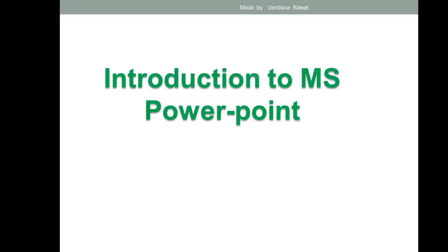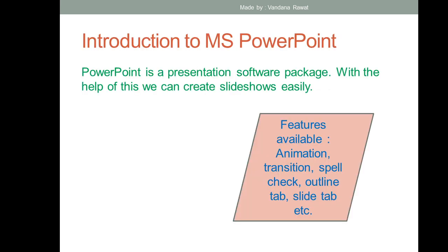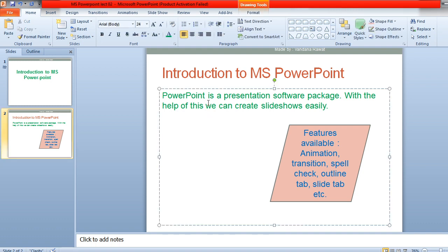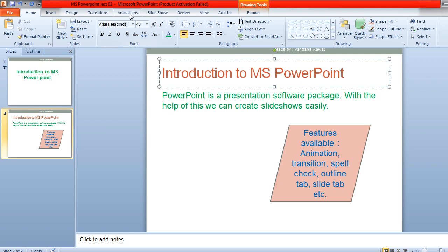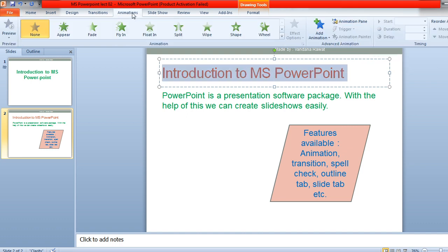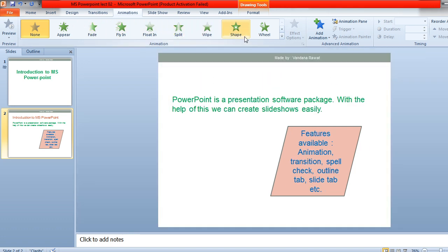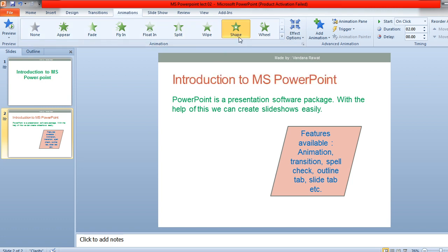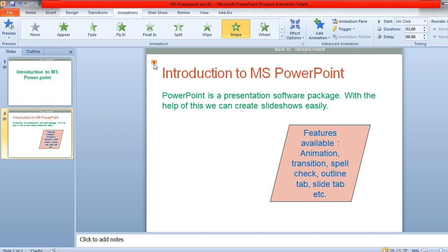When you press the F5 function key, you can check how the contents will appear on screen in slideshow mode. You'll notice there is no animation yet. To add animation, select the heading part, click on Animation, and choose the type of animation — for example, a shape animation on the heading. This will be the first thing that appears when you enter the slide.